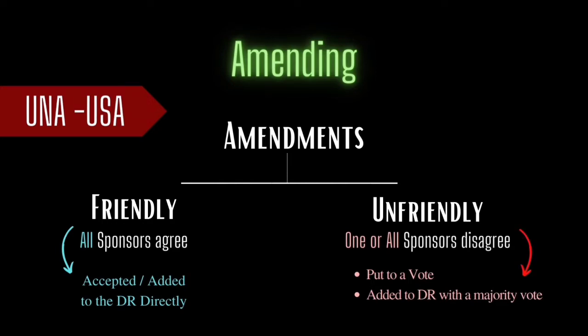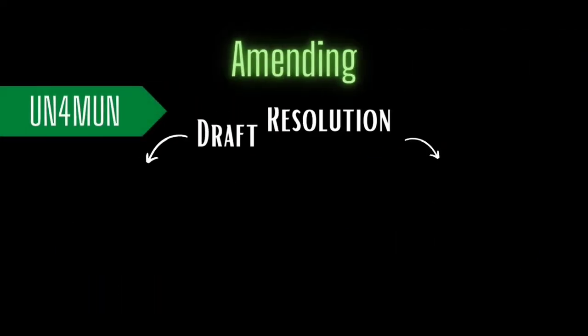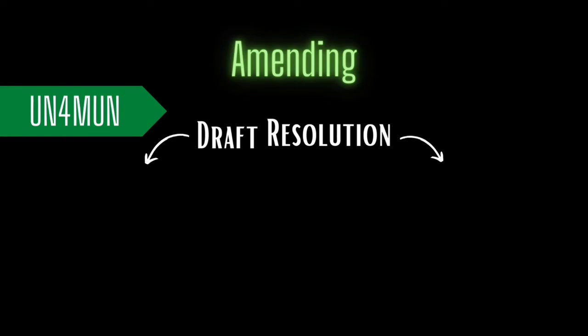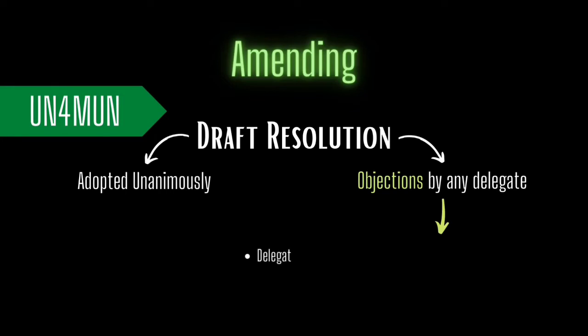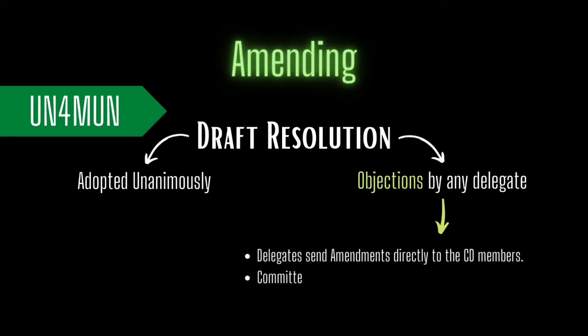Under UN4MUN procedure, when a draft resolution reaches the floor, it is adopted generally by consensus where there is no provision for formal voting. If the committee informally expresses a need for voting or amendments, the committee then reaches the amending stage. Here, delegates wanting amendments send their amendments as an official written document, which will then be voted upon by the delegates.